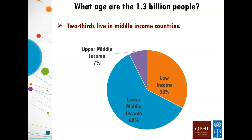In terms of the income of the countries — we primarily cover low- and middle-income countries — two-thirds of the poor people live in middle-income countries, as has been the case almost since we started measuring the global MPI. In middle-income countries, the levels of poverty range from 1% to 57% at the national level, and up to 91% at the subnational level. So middle-income countries themselves have a great variety in terms of levels of poverty.